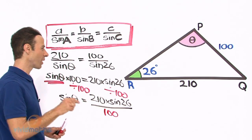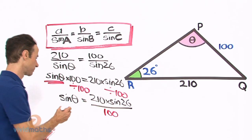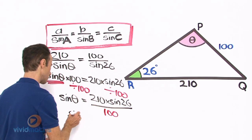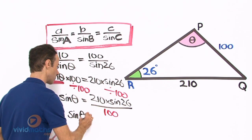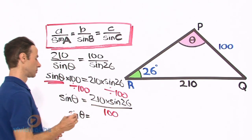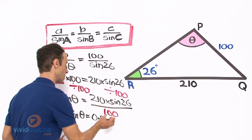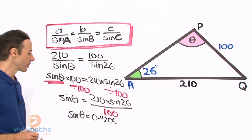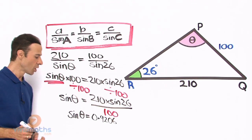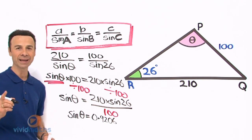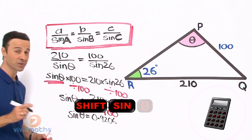OK sine theta equals 0.9206. We are after theta by itself so let us shift sine. Now we shift sine and that will give us that is going to be 67 degrees 0 minutes 40 seconds.